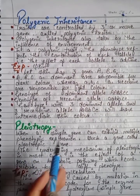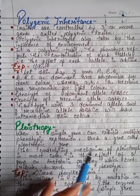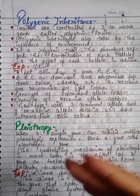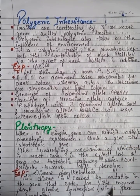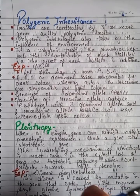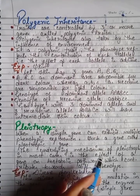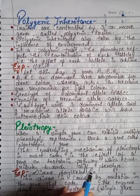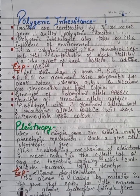Pleiotropy: when a single gene can exhibit multiple phenotypic expressions, such a gene is called a pleiotropic gene. The underlying mechanism of pleiotropy in most cases is the effect of a gene on a metabolic pathway which contributes towards different phenotypes. Example: the disease phenylketonuria, caused by mutation in a gene that codes for the enzyme phenylalanine hydroxylase — that is a single gene mutation.